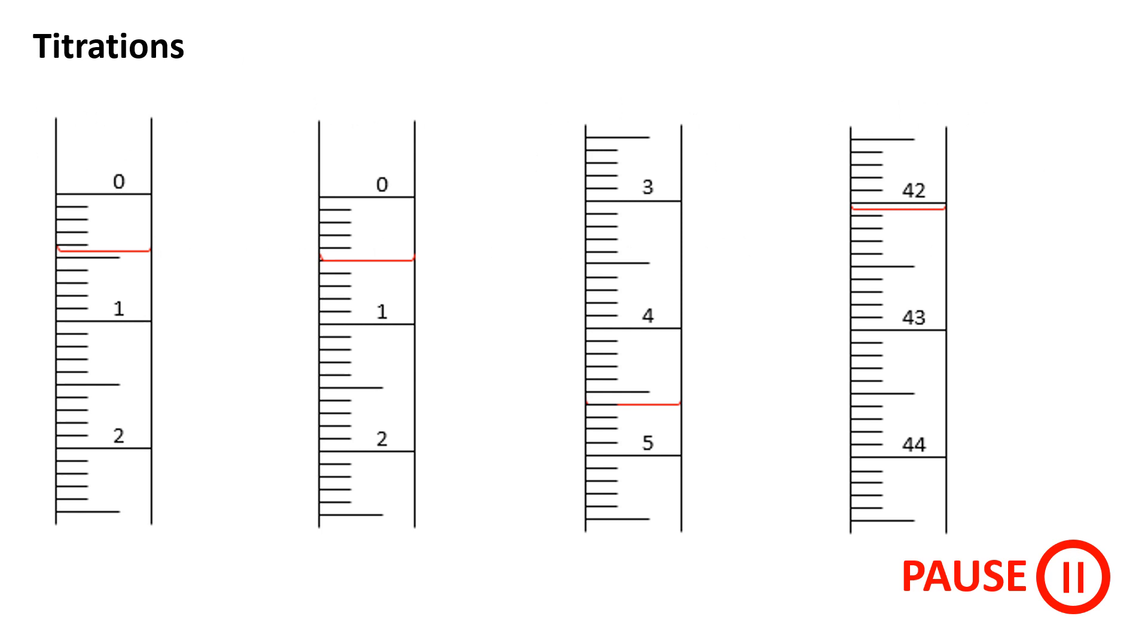Pause the video and see if you can read off each of these four burette readings. The meniscus is shown in red. Reading from left to right, these burette readings should be recorded as 0.45 cm³, 0.50 cm³, 4.60 cm³ and 42.05 cm³.